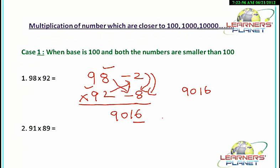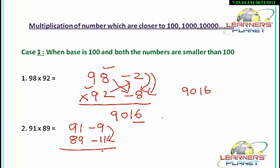Let's take the example of 91 into 89. 91 is minus 9 from 100, and 89 is minus 11 from 100. The multiplication: 11 into 9 is 99. From the cross subtraction, either 89 minus 9 or 91 minus 11 gives us 80. So the multiplication of 91 into 89 gives 8099.